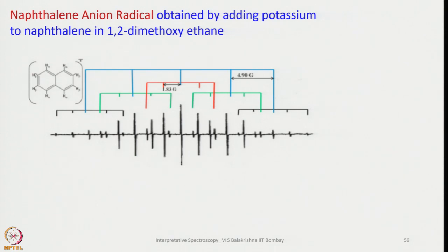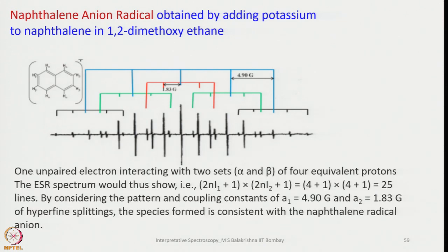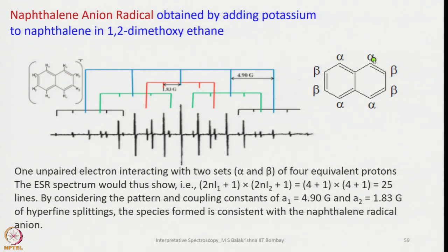It is very interesting to record its EPR spectrum. You can see initially there are 5 lines, and then these 5 lines are further split into 5 lines, giving 25 lines total. This happens because naphthalene has two different types of hydrogen atoms: 4 alpha hydrogen atoms and 4 beta hydrogen atoms, and they are coupled non-equally. The alpha protons first give a quintet by the 2nI+1 rule, and then each line is further split by the 4 beta protons into another quintet, yielding 25 lines.